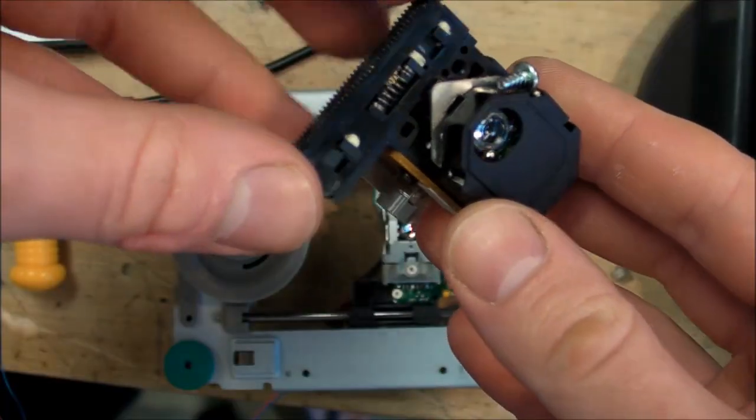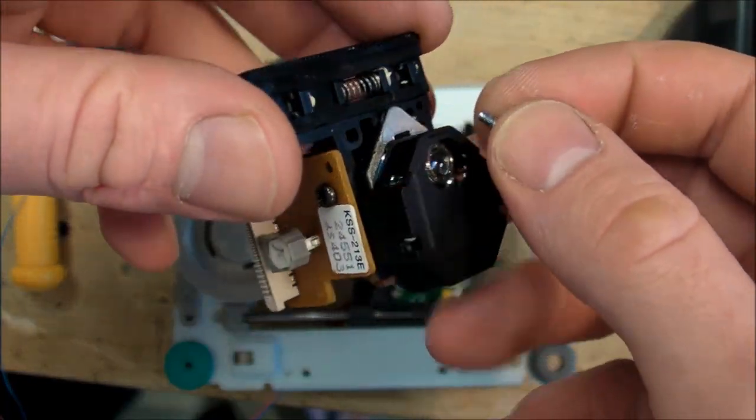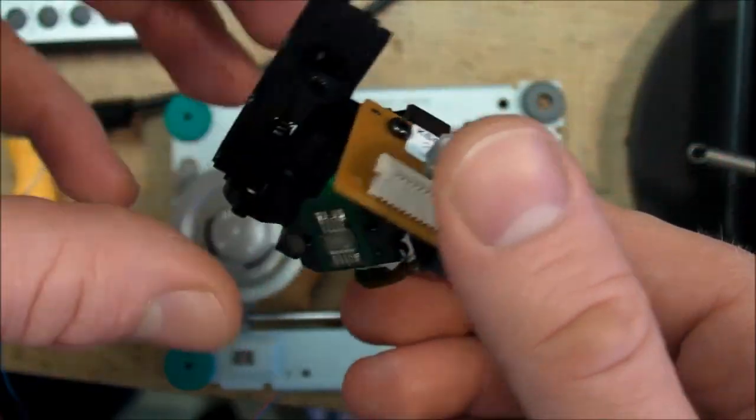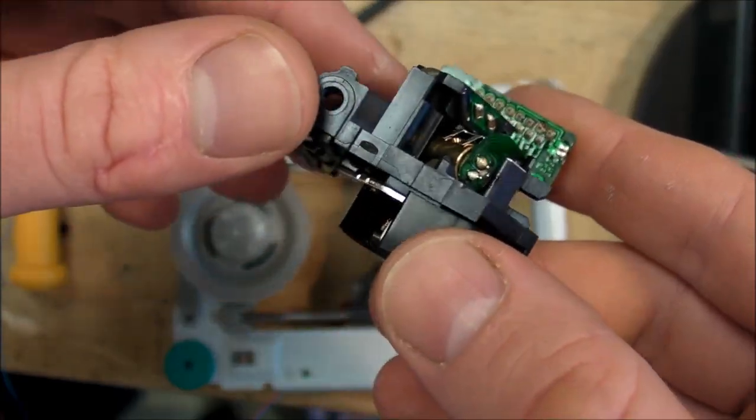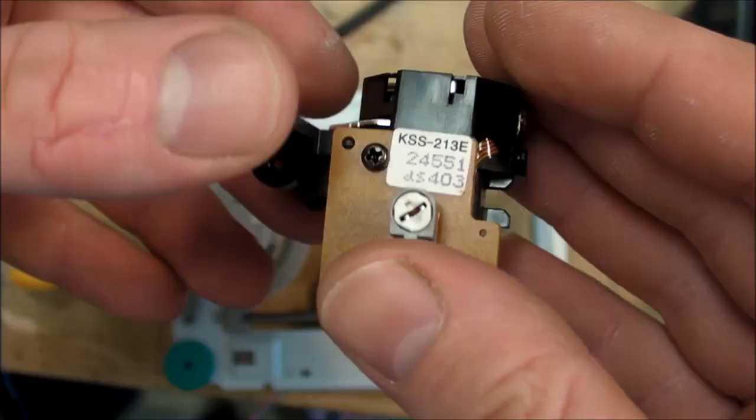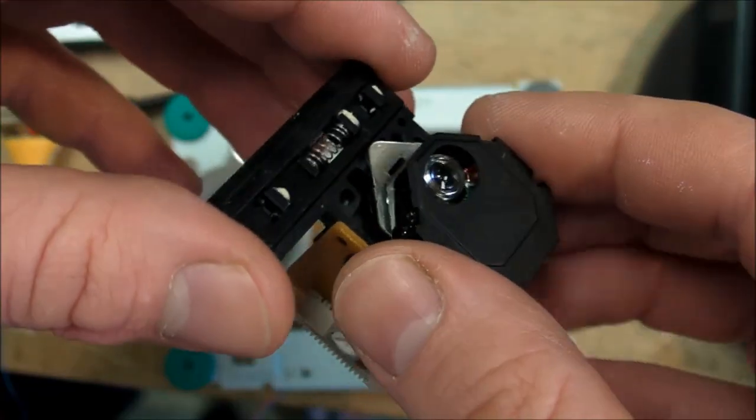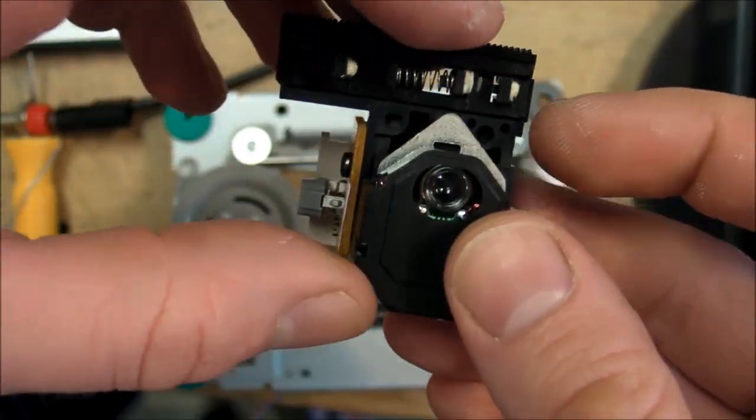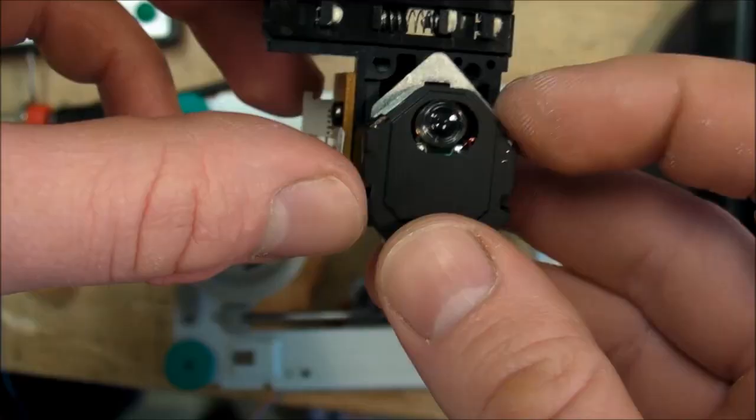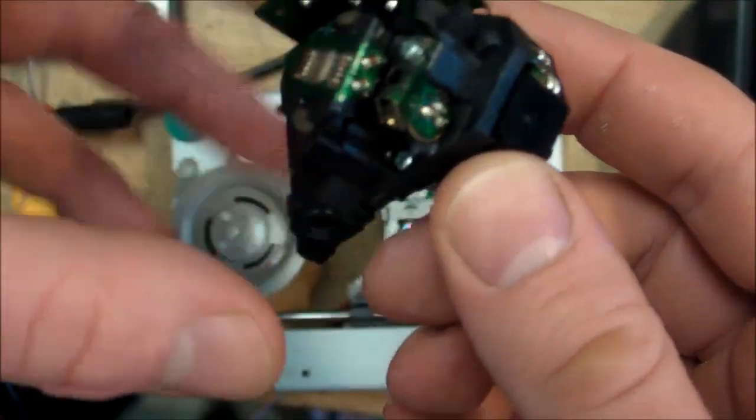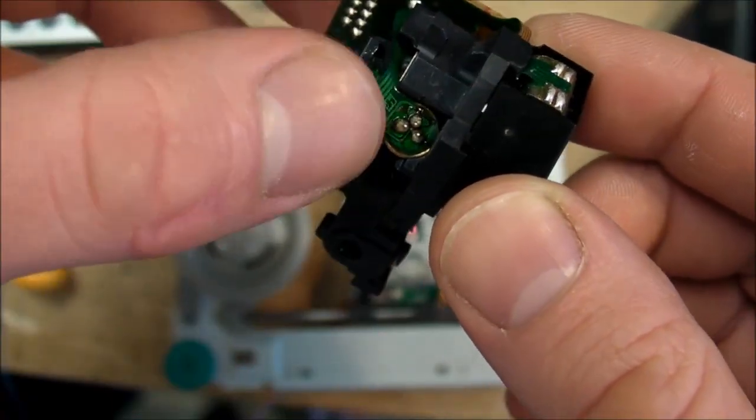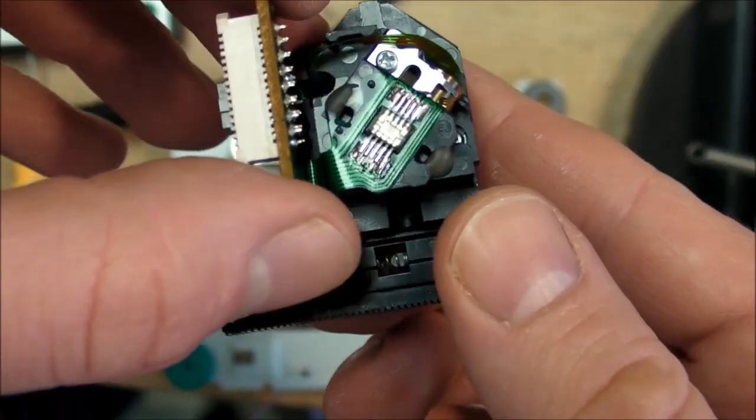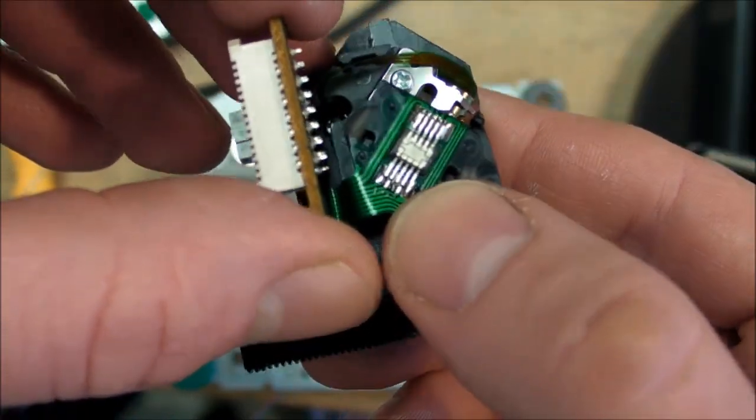I got that laser module out of the assembly. If you've never taken one of these things apart, get your hands on an old CD player or CD-ROM drive and just have at it. Take apart the optical assembly and everything else inside. There's some really cool stuff, especially some tiny neodymium magnets on the inside of the lens assembly. Here's a better look at the laser diode and its connections and the photodiode receiver package on the bottom.